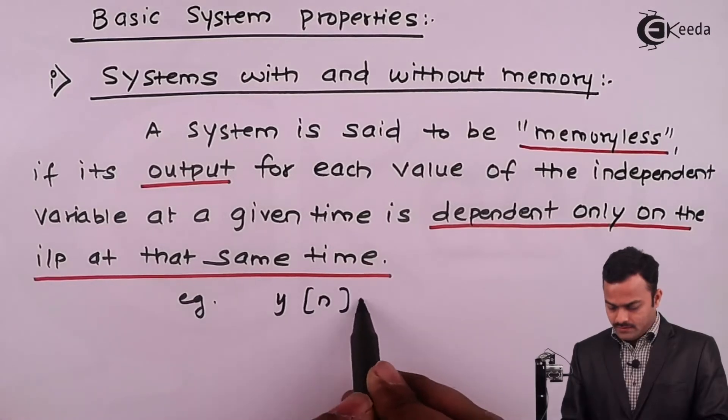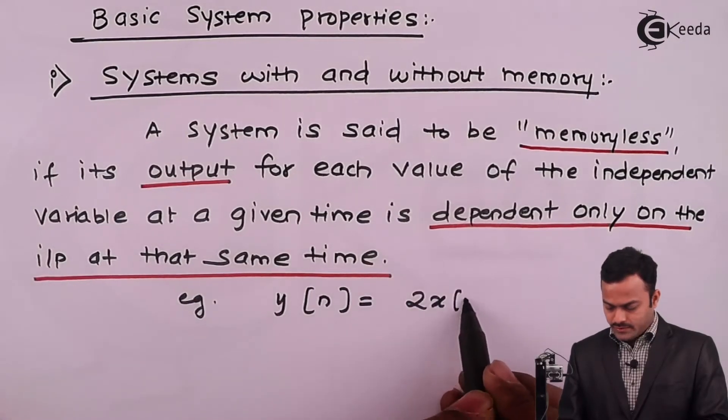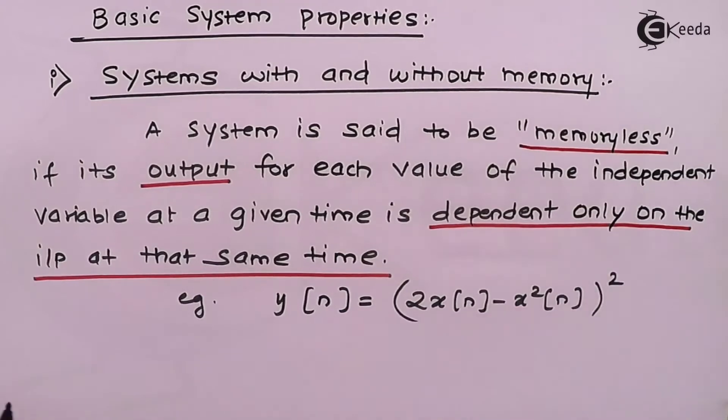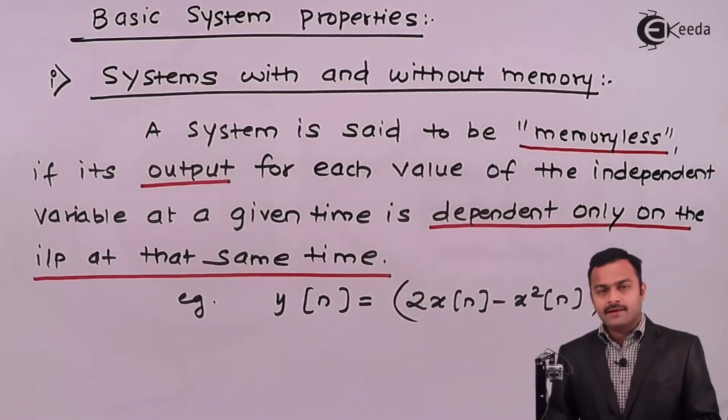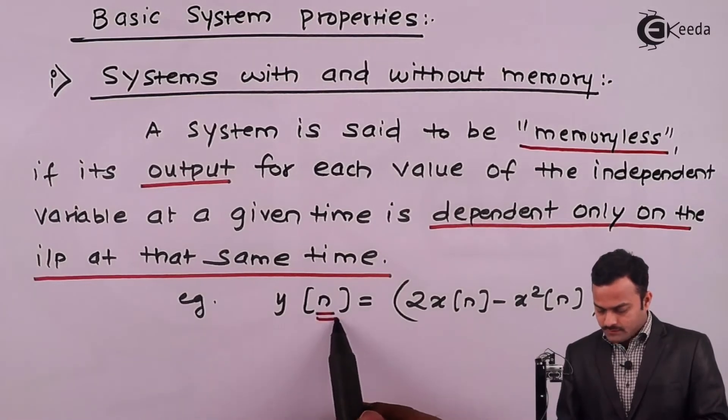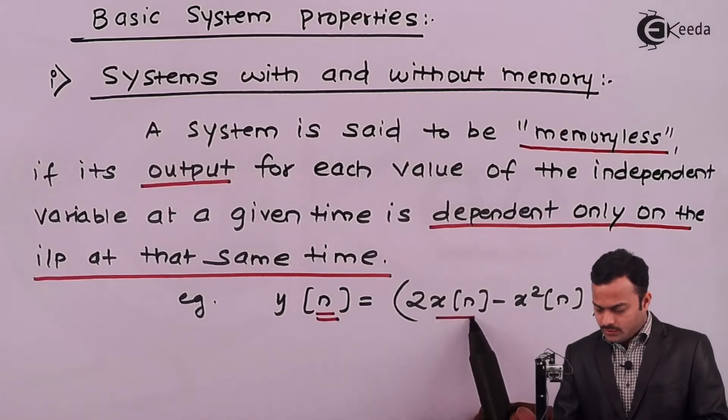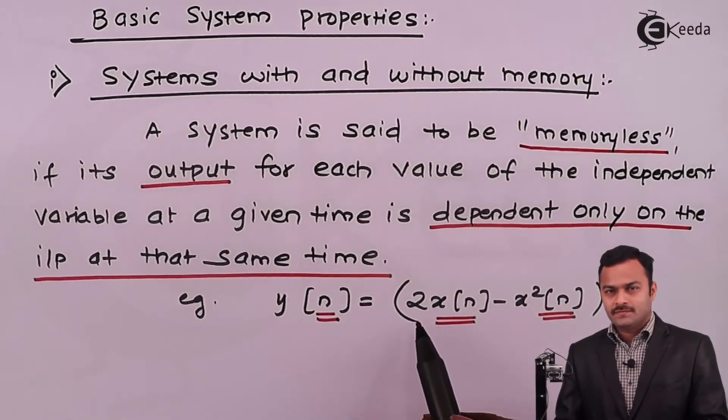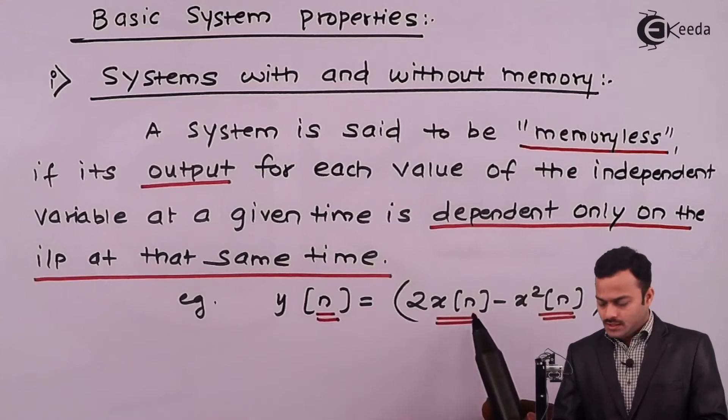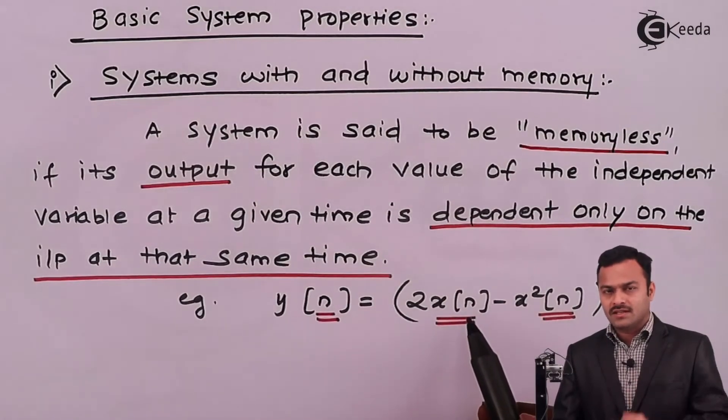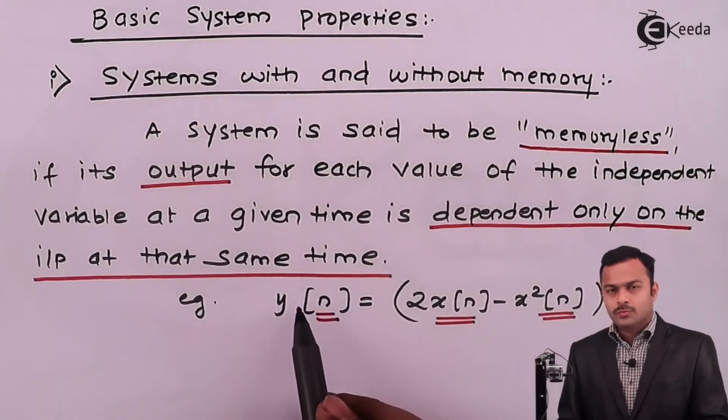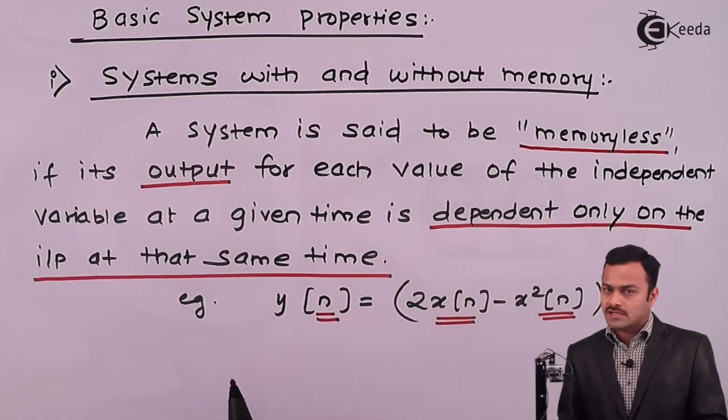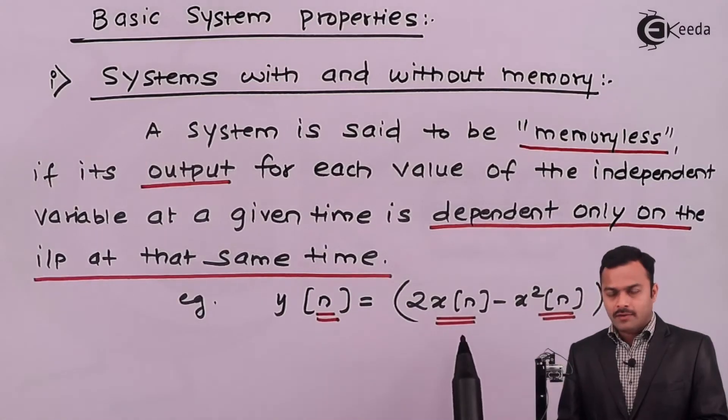Example: y[n] = 2x[n] - x²[n]. Though it is looking like a very complicated equation, see here, I want y[n] and y[n] is obtained only by knowing x[n]. Suppose I want y[0], I just need to know what is x[0]. I want y[2], I just need to know what is there at n=2 in the input signal. So output at any instant depends upon whatever the input is present at that particular instant only. That is what a memoryless system.